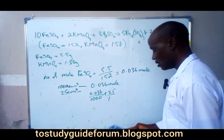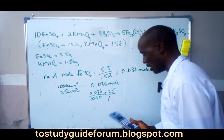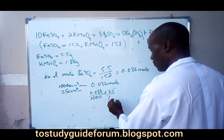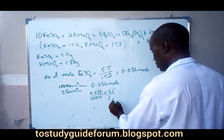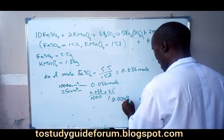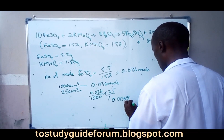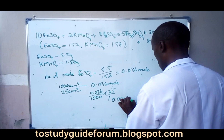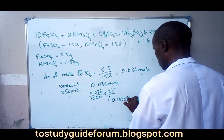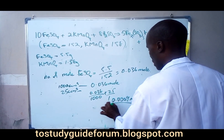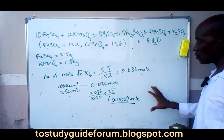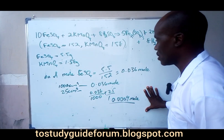We have it that the amount contained in 25 cm³ is 0.0009 moles. That is what is contained there.